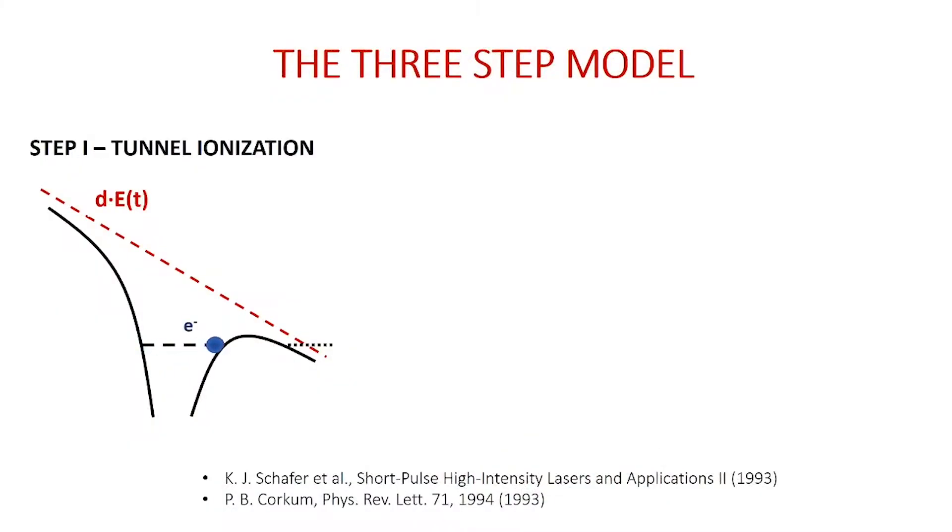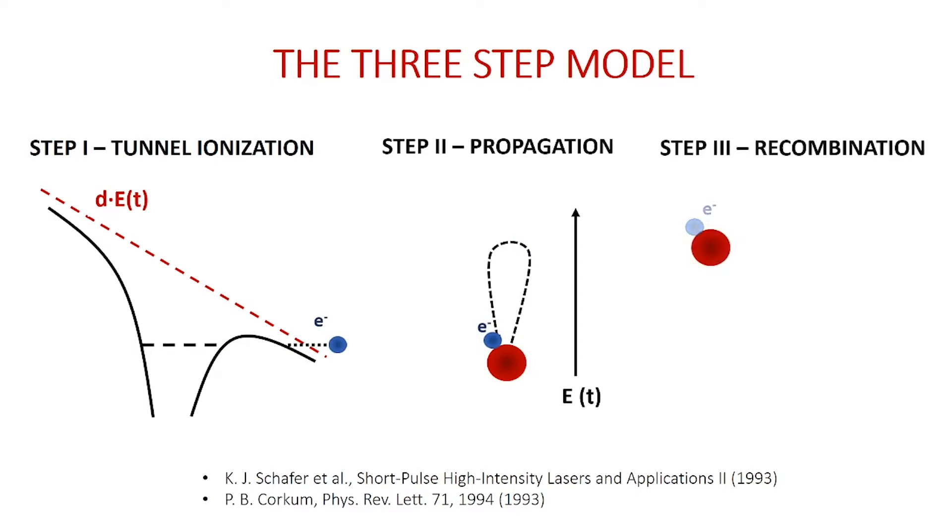In the first step, due to the effect of the external electric field of the laser, the atom is ionized by tunnel ionization. Then, the ejected electron is accelerated in the external electric field and eventually it can recombine with the parent ion, producing the emission of an XUV photon.